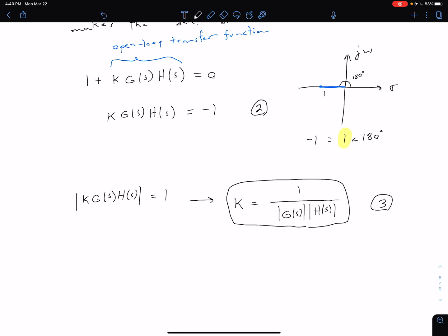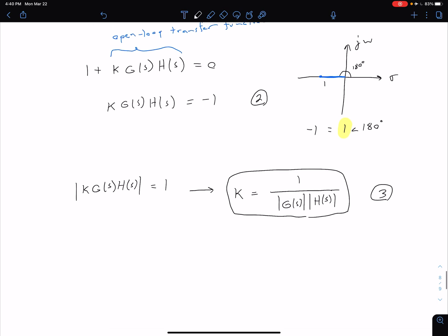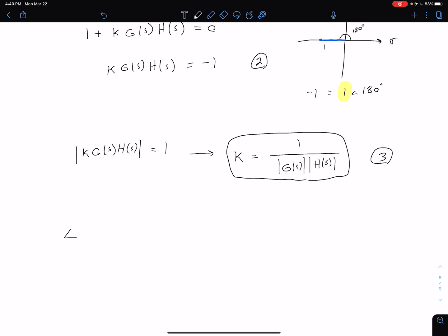And now we want to address that other part of the expression, our angle data. So we can say that our angle of K G of S H of S needs to be equal to some odd multiple of 180. To generalize, we can say two M plus one times 180 degrees, where M is equal to zero plus or minus one plus or minus two, so on and so forth. With that piece of information, we're addressing this angular data here. So I'm going to call this equation four.